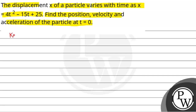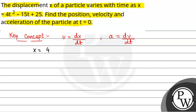First of all, we will see what will be the key concept used to solve this question. The key concept that will be used is velocity, given by dx by dt where x is the displacement, and acceleration, given by dv by dt where v is the velocity. We have been given x is equal to 4t squared minus 15t plus 25.